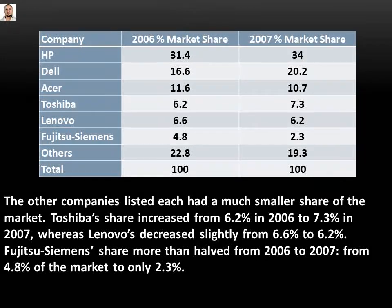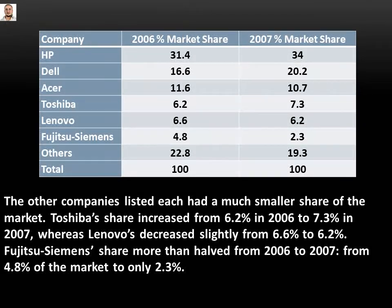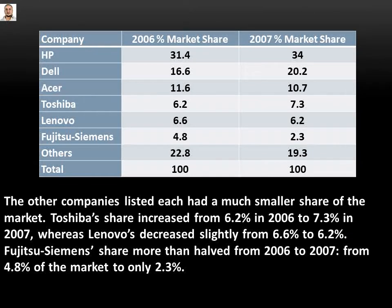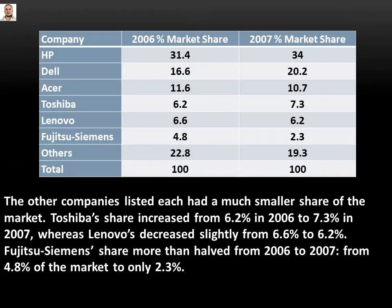Toshiba's share increased from 6.2 percent in 2006 to 7.3 percent in 2007, whereas Lenovo's decreased slightly from 6.6 percent to 6.2 percent. For Fujitsu Siemens — why the apostrophe after the S? Because the word ends in S and it's possessive. In a possessive word ending in S, we put the apostrophe after the S.